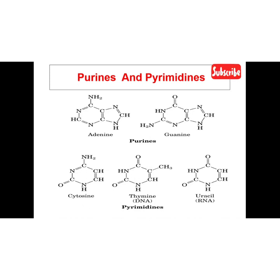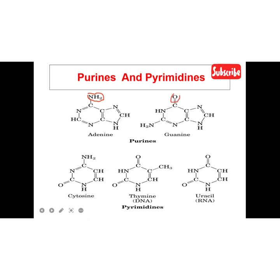For purines, we have two types found in DNA: adenine and guanine. The major difference between adenine and guanine is at this carbon position — for adenine, the amino group (nitrogen group) is located at this carbon, while for guanine, the oxygen group is located at this carbon and the amino group is at the other position.